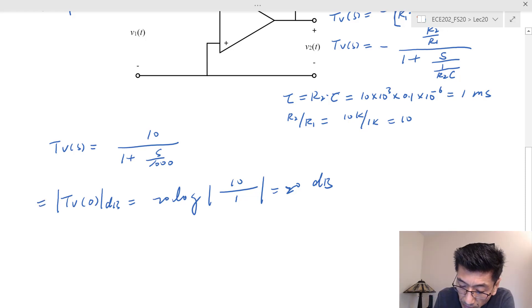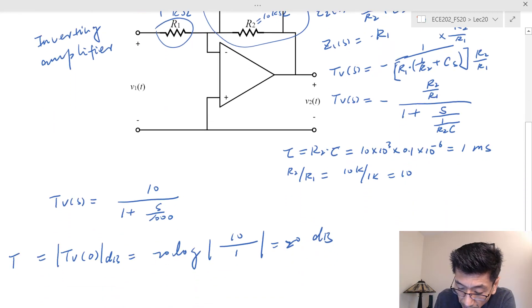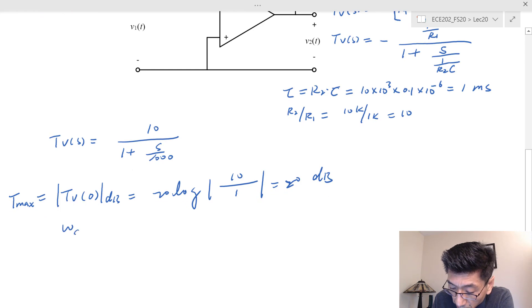This is basically our T_max. The second question is to determine omega_c and also figure out the passband gain T_max. And for the omega_c, that's quite clear: omega_c is going to equal 1000 radians per second.